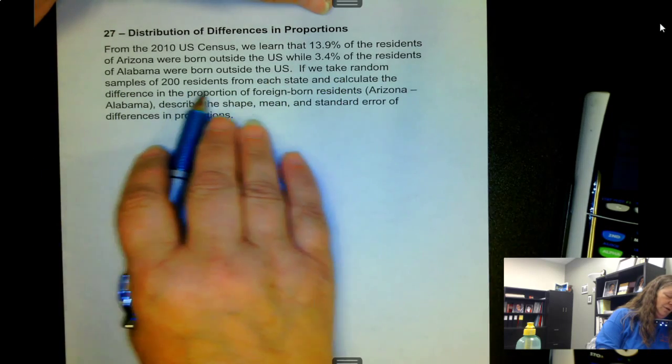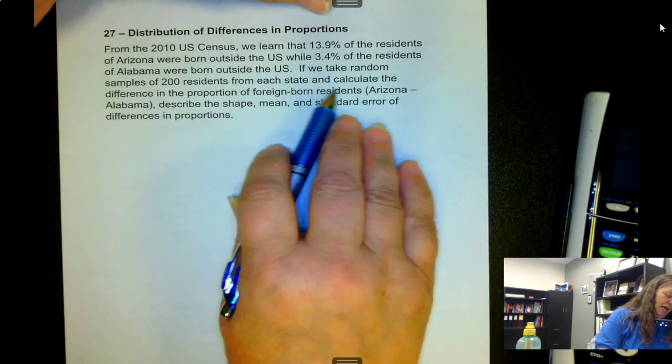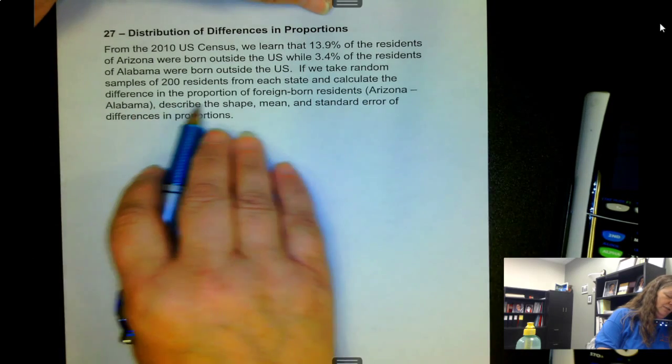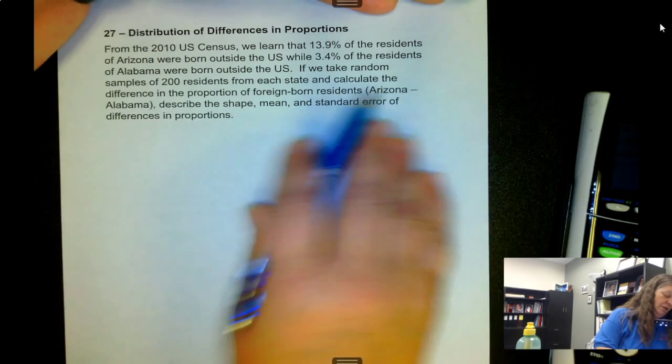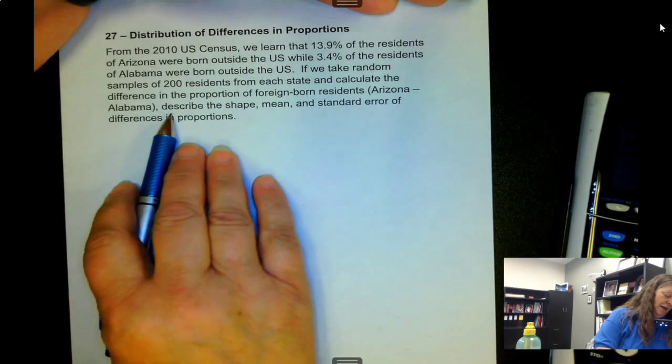If we take random samples of 200 residents from each state and calculate the difference in the proportion of foreign-born residents, we're going to do it Arizona minus Alabama.